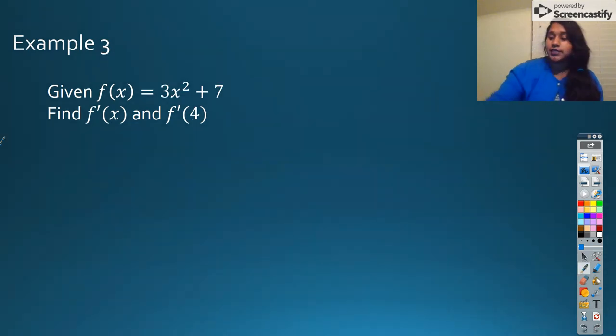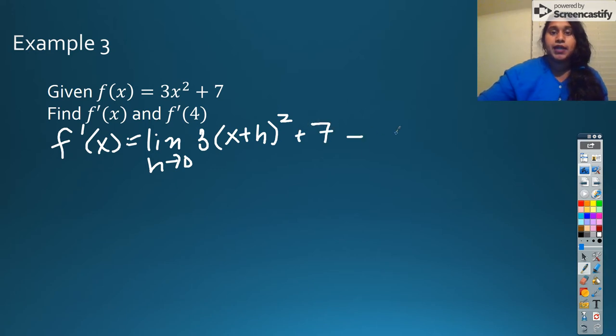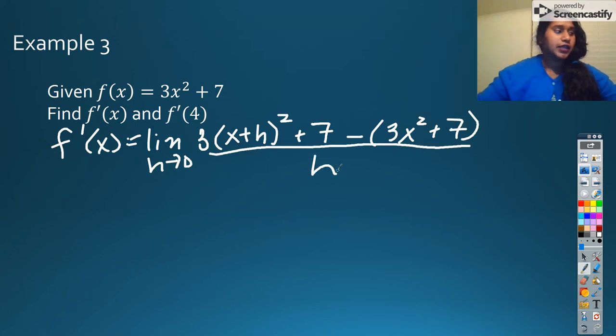I've got one final example for you guys. I'm going to try and get through this as quickly as possible for my time limit gets off. So I've got f prime of x is equal to my limit as h approaches 0 of f of x plus h. So 3 times x plus h squared plus 7 minus my original function all over h.